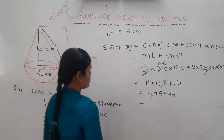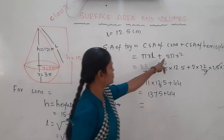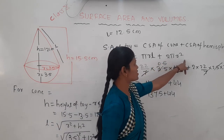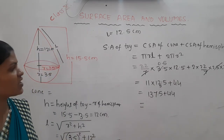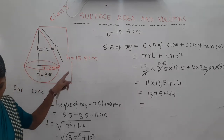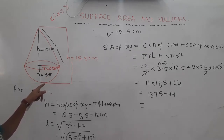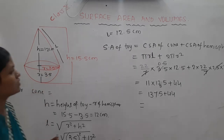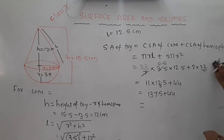The curved surface area of the hemisphere uses 2πr². The radius is 3.5 cm. Calculating 2 × 22/7 × 3.5 × 3.5: 2 into 0.5 gives 1, then 22 × 3.5 = 77. Adding these values: 137 + 77 will give the total.